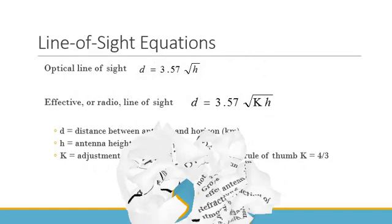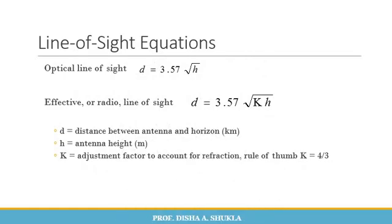There is an important relationship for determining the height of the antenna and the corresponding distance of transmission. It is given as: dm = √(2Rh1) + √(2Rh2), where dm is the distance between the antennas, R is the radius of the earth, h1 is the height of the transmitter antenna, and h2 is the height of the receiver antenna. For a given antenna of height h, dt = √(2Rh), where R is the radius of the earth and h is the height of the antenna.